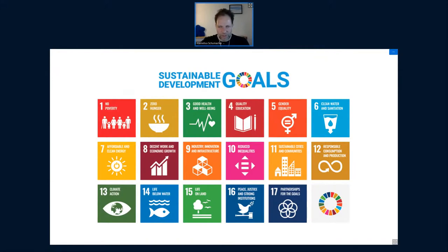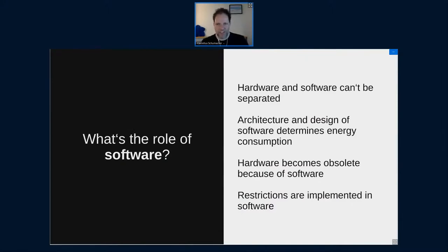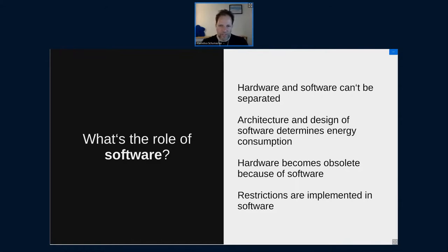We can go further down and look at it more concretely. What's the role of software? We're a software community in KDE, so how can we approach this? One important thing is that hardware and software can't really be separated — computers don't work without software, software can't work without hardware. The architecture and design of our software determines how hardware is used and how much resources are consumed, and influences energy consumption. The efficiency of the hardware itself also plays a role, but the way software is written matters.